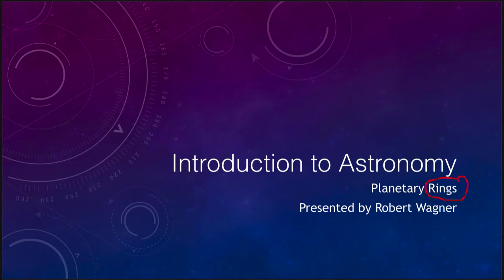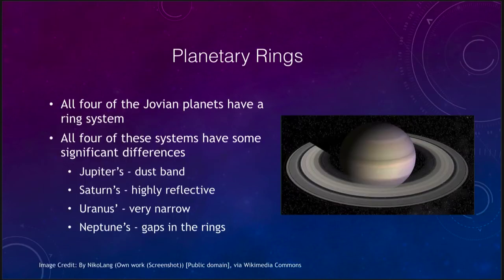Let's take a look at what we see here. Here's our image — this is the planet Saturn, and you can see its ring system stretching out around it.